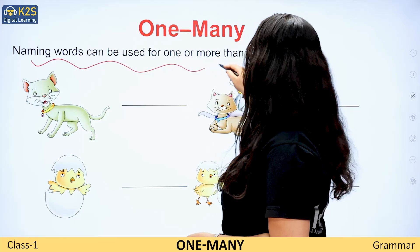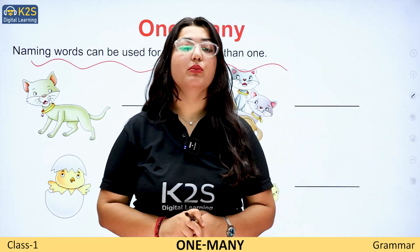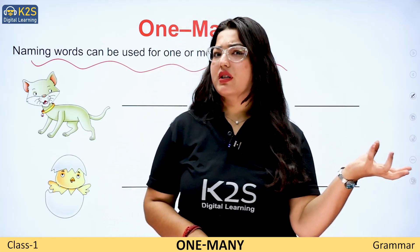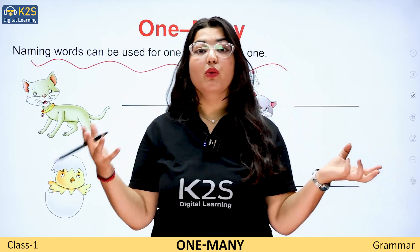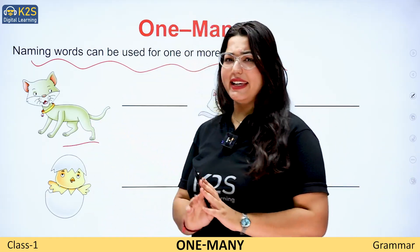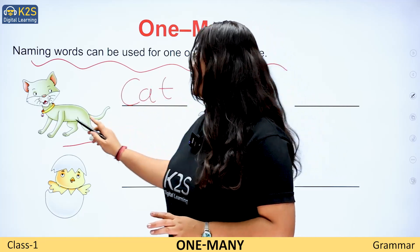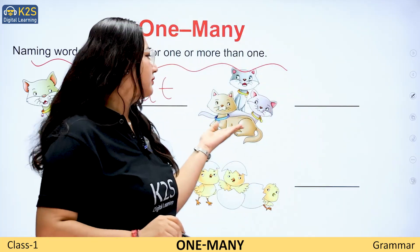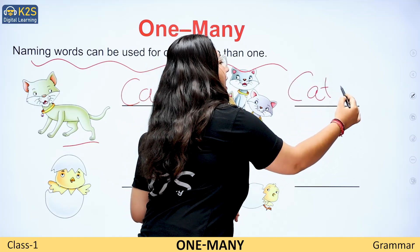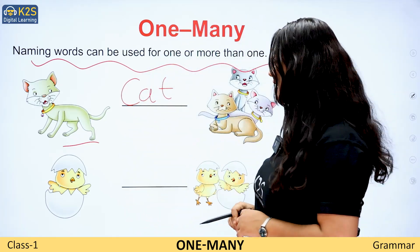Naming words can be used for one or more than one. The nouns can also be one and more than one. Like cat — C-A-T, cat. How many cats is one? But here, C-A-T-S, cats. There are many cats.